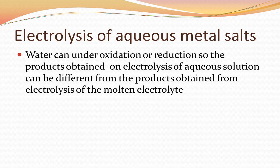Next, we look at electrolysis of an aqueous solution of an ionic compound. When water is present, you have a positive ion and a negative ion from the ionic compound, plus water as a third substance. With three substances in the electrolytic cell, water sometimes competes for oxidation or reduction with the metal ions present. Therefore, the products obtained may not be the ones we expect, but we can make predictions based on standard reduction potential values.